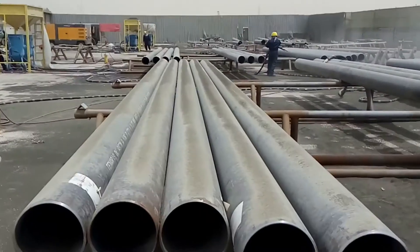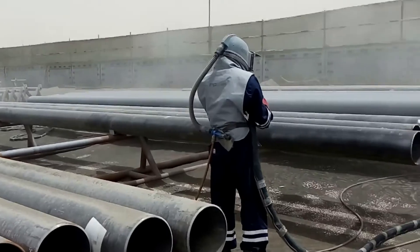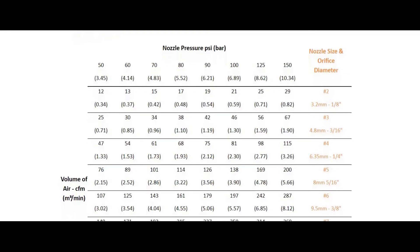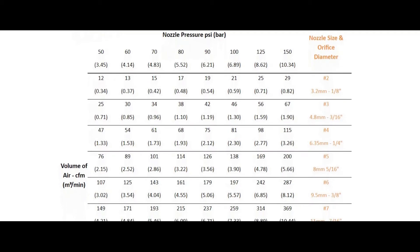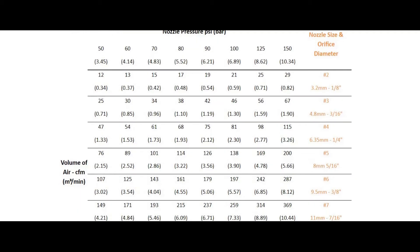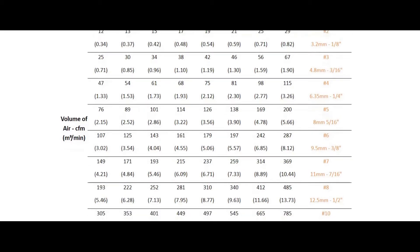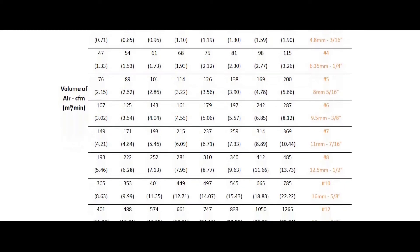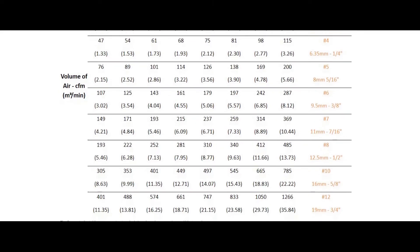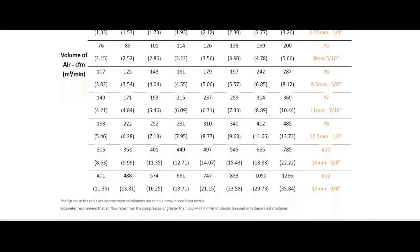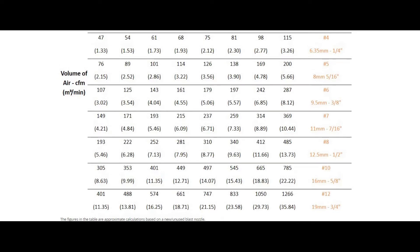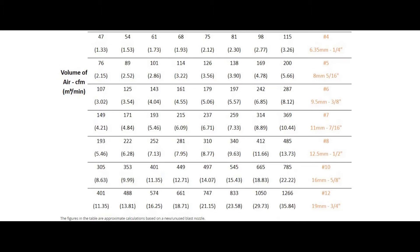The choice of nozzle is determined by the available airflow produced by the compressor — if a larger nozzle is chosen, a higher air capacity is required. The table below shows the correlation between volume of air, nozzle size, and nozzle pressure, and is often used in the industry to select nozzle size. For example, if a user requires 100 PSI nozzle pressure using a ½ inch (No. 8) nozzle diameter, they would need a 340 CFM rated compressor. If a 222 CFM compressor were used, the nozzle pressure would be reduced from 100 PSI to 60 PSI, reducing blasting efficiency by 50%.